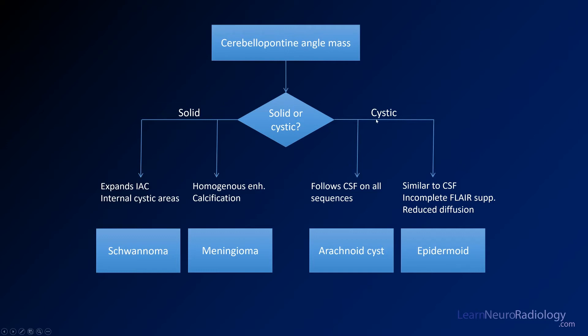For cerebellopontine angle cystic masses, the main differential is arachnoid cyst versus epidermoid. Arachnoid cysts follow CSF on all sequences, whereas epidermoids have a dirty CSF appearance that incompletely suppresses on FLAIR — not quite as dark as CSF on T1. Most importantly, epidermoids show reduced diffusion and will be very bright on diffusion weighted imaging.